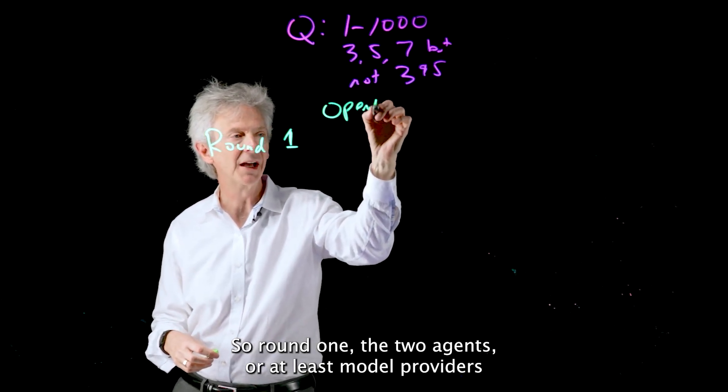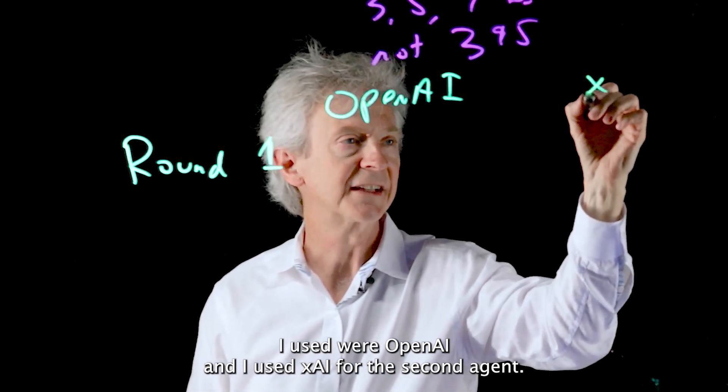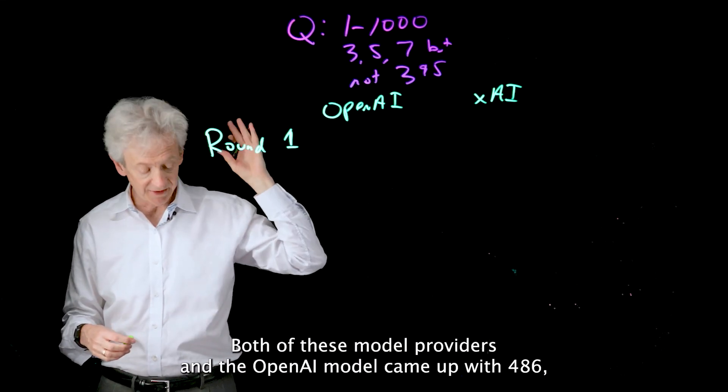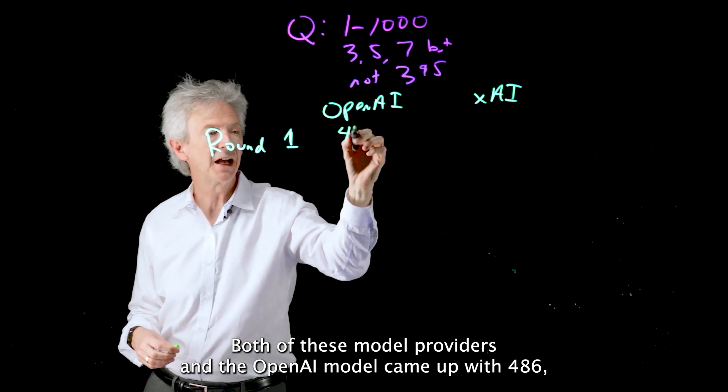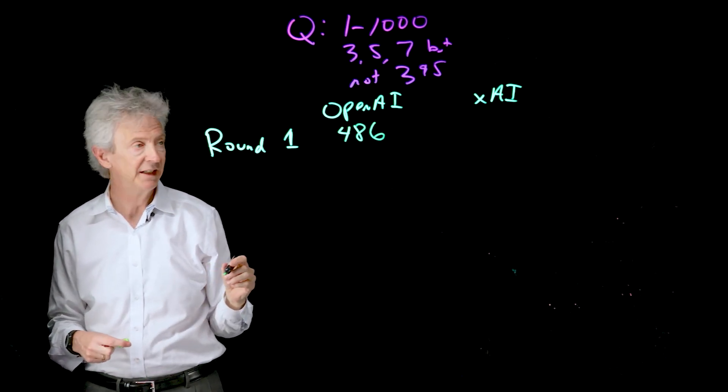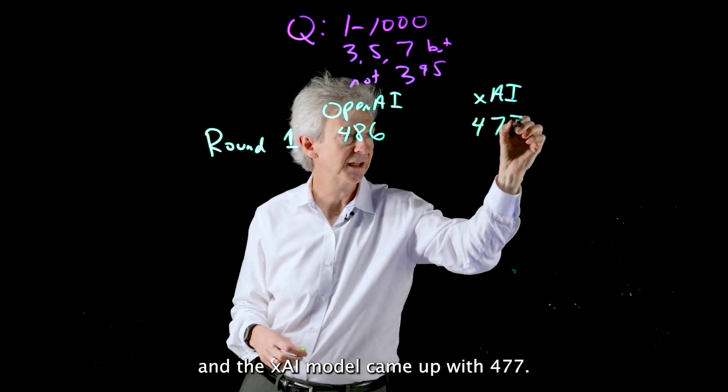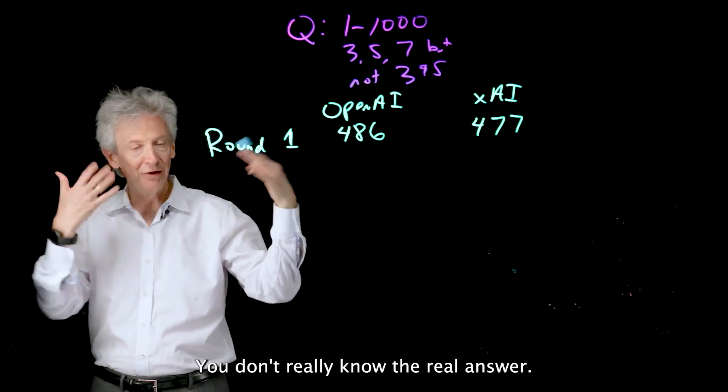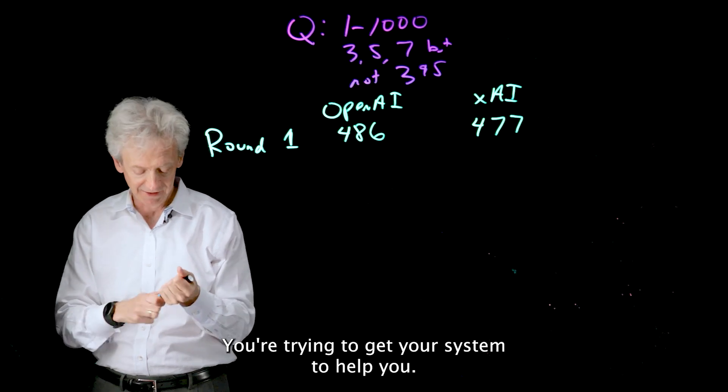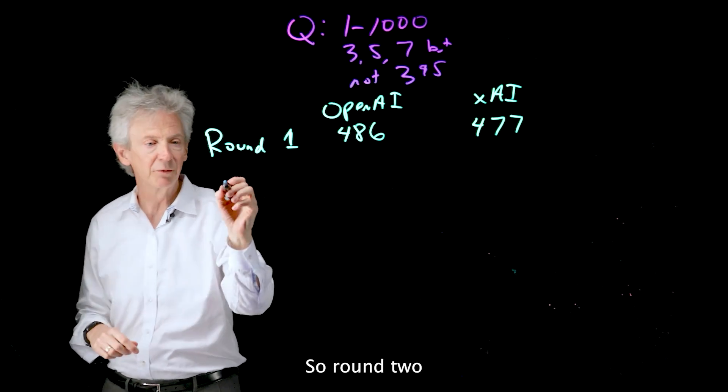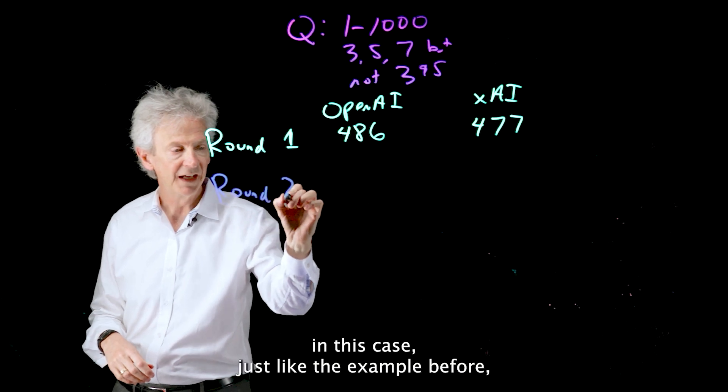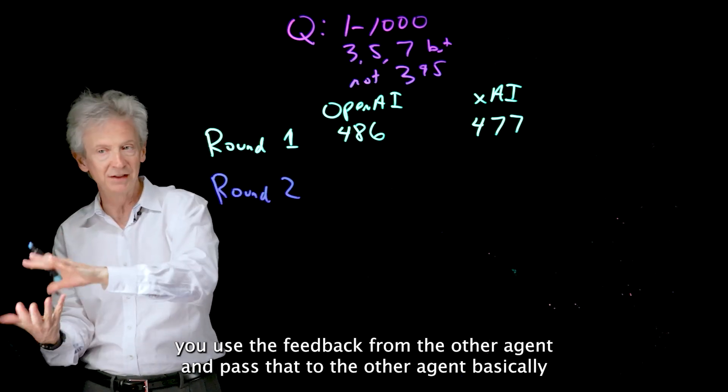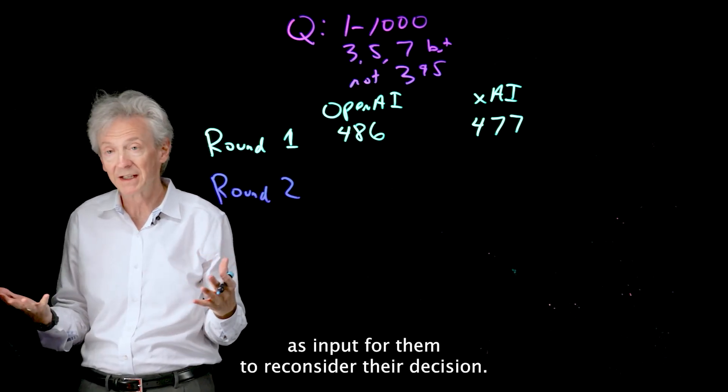So round one, the two agents or at least model providers I used were OpenAI and I used XAI for the second agent. In round one I asked both agents this question, both of these model providers, and the OpenAI model came up with 486 and the XAI model came up with 477. Now this time I won't tell you which one is right, but you know that you have a problem, you don't really know the real answer, you're trying to get your system to help you. So now ask again. So round two, in this case just like the example before, use the feedback from the other agent and pass that to the other agent basically as input for them to reconsider their decision.